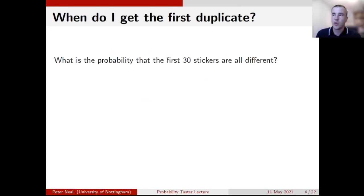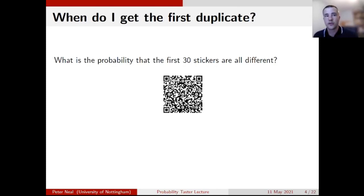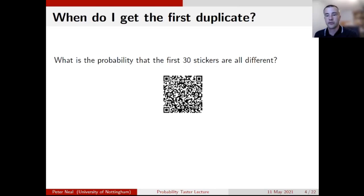So how does that help us with the problem we're interested in — when do I first get my first duplicate when collecting stickers? A question for you: using the QR code or the web link in the chat, what is the probability that the first 30 stickers I receive are all different? We've got a few options ranging from a 10% chance that they're all different (0.1) through to a 95% chance (0.95). I'll give a minute for people to look at the possible answers — there are six options — and choose which one you think is right.